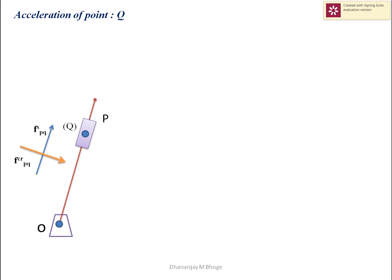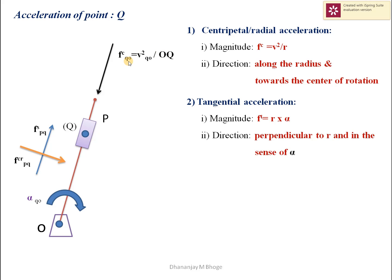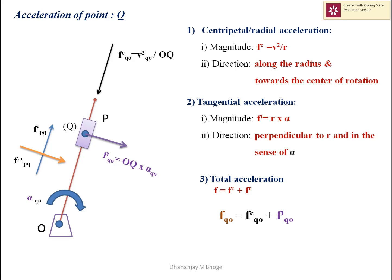Accelerations of point Q: there are two components. First, centripetal or radial acceleration FcQO — when the link rotates, Q rotates about O in a circular path, so it has centripetal acceleration parallel to the radius of rotation OQ directed toward O. Second, tangential acceleration FtQO, which is perpendicular to the radius of rotation OQ, present if the link rotates with non-uniform speed. The total acceleration of Q relative to O is the vector sum of these two components: FcQO and FtQO.